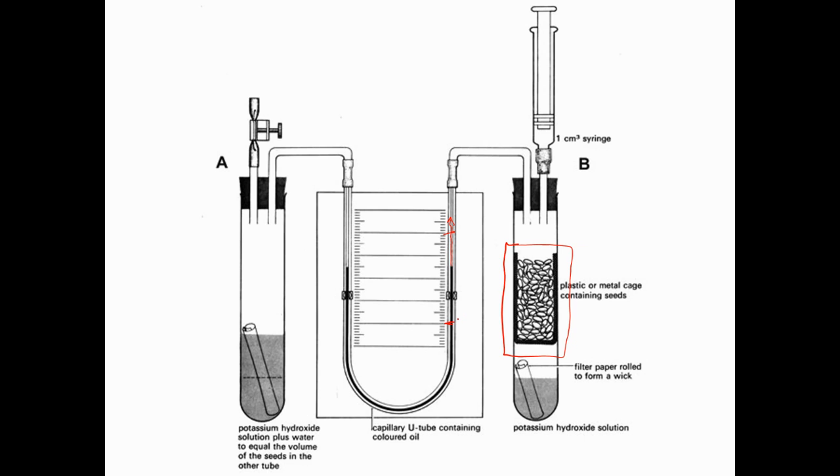So maybe we leave it for an hour and we see how much the coloured oil or water moves in that hour. That will tell us how much of the oxygen in this boiling tube has been absorbed by the seeds.